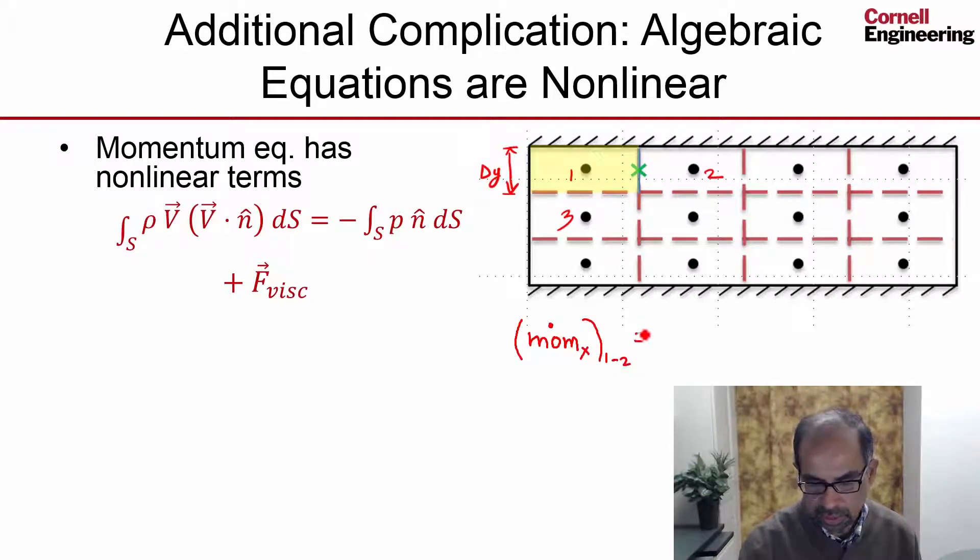So that is equal to rho is a constant. We're looking at the x component of velocity. And so we need the velocity over this face, and we'll assume that it's constant and equal to the value at the center like we did before. So that will give us u12.